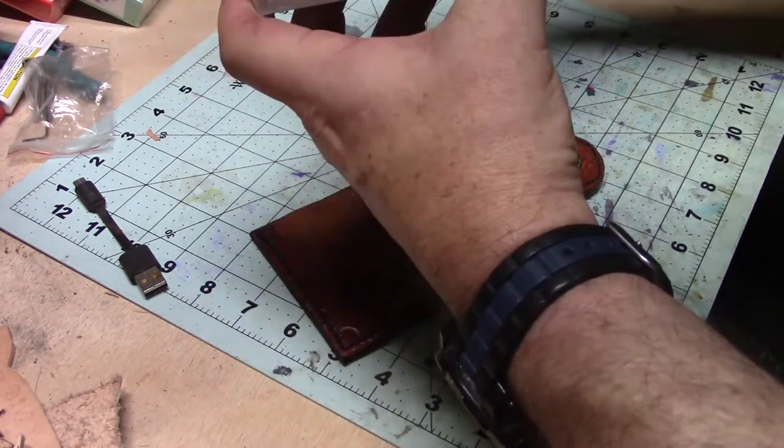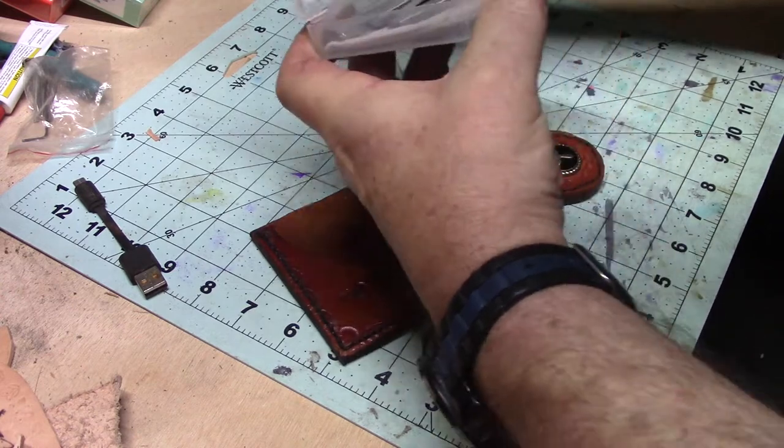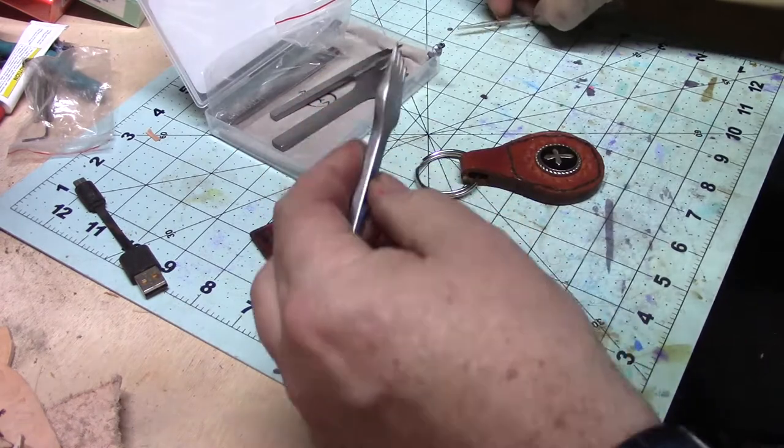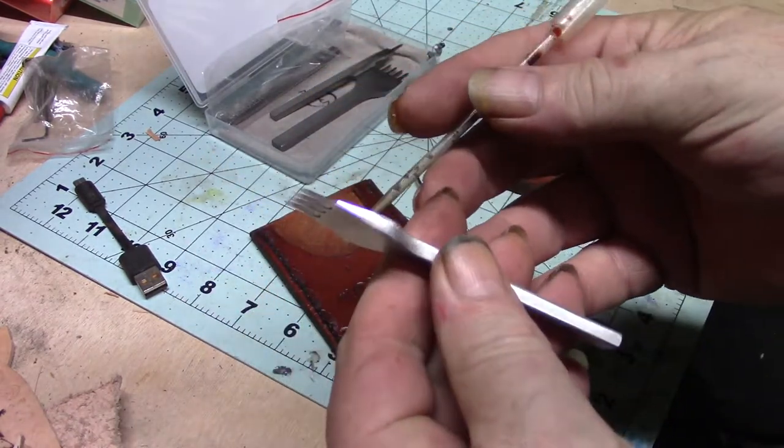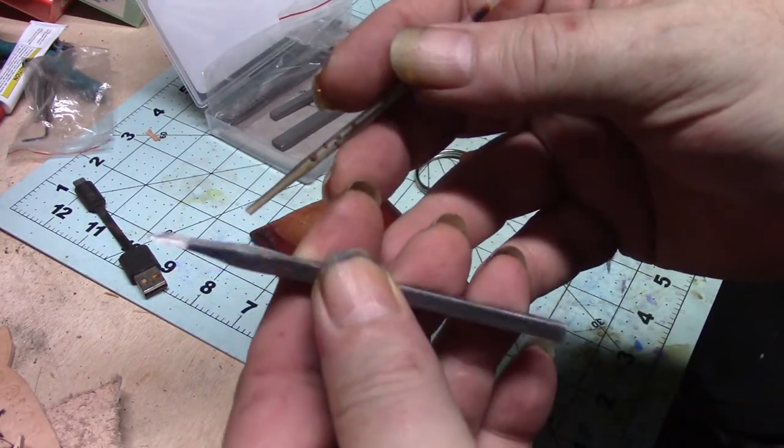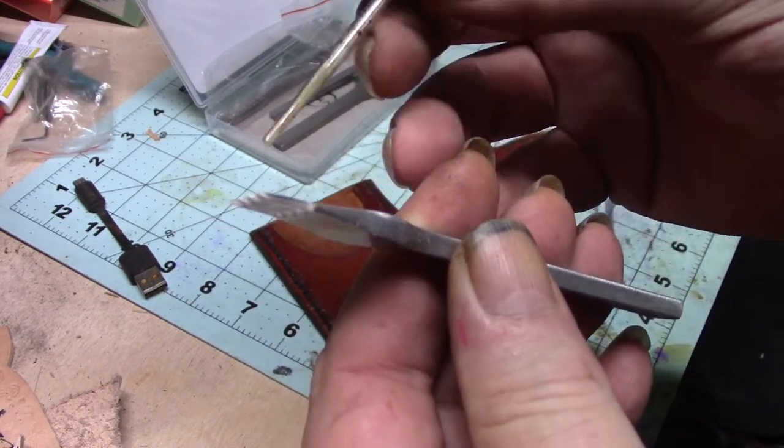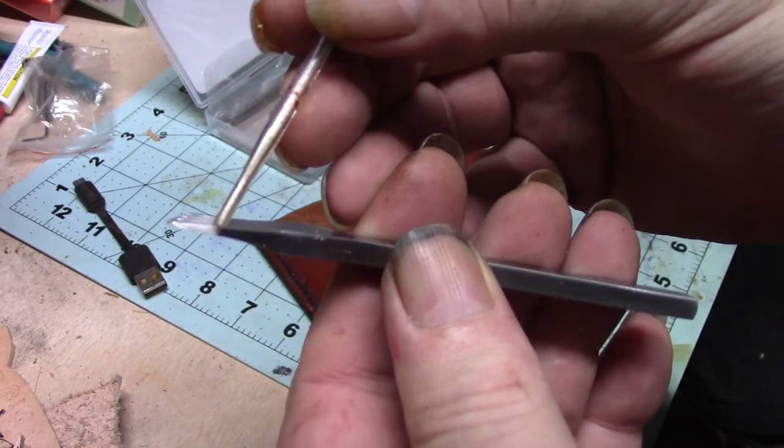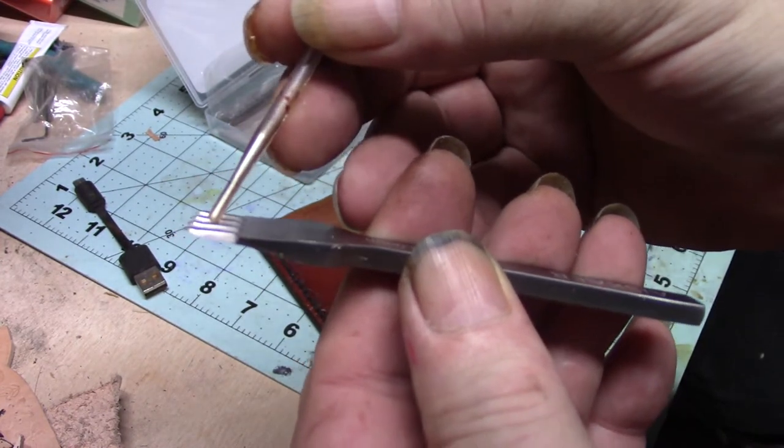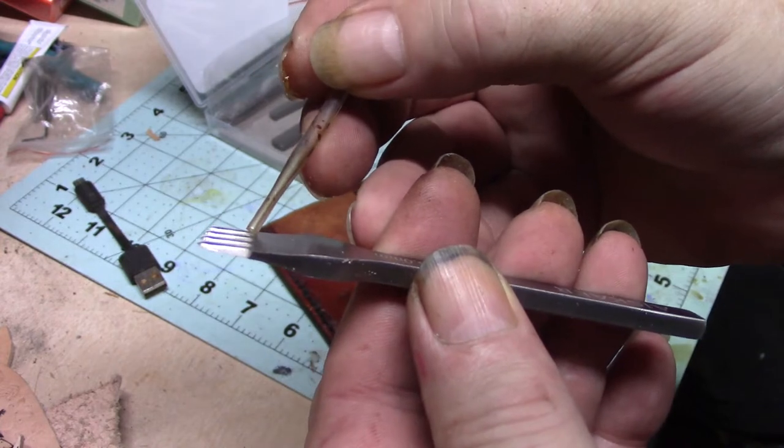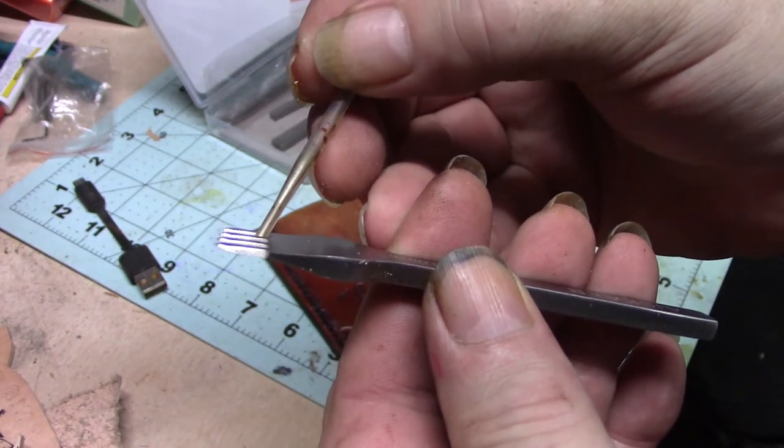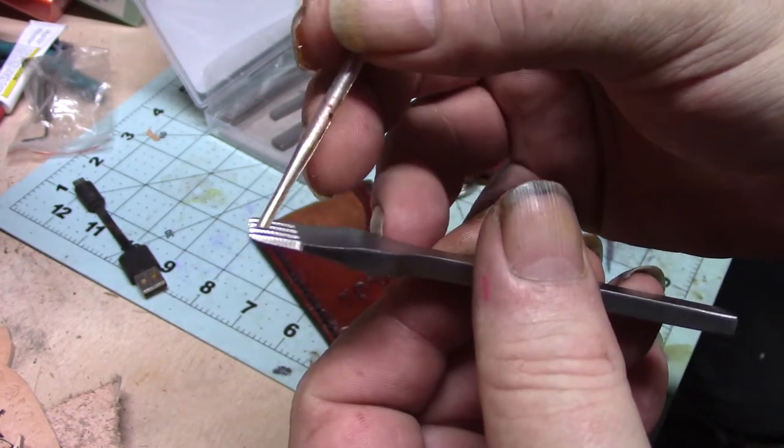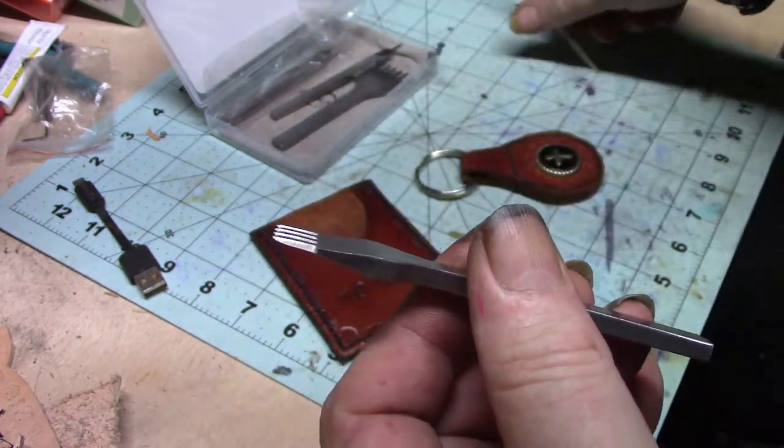But there's a five millimeter set here that I also got and I haven't used yet. Along here you can see these little ridges. And what these ridges do, when you're going to try to pull the punch out of the leather, this is what wants to stick.